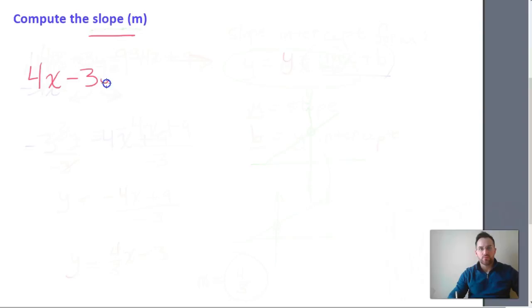We're going to have 4x negative 3y is equal to 9.